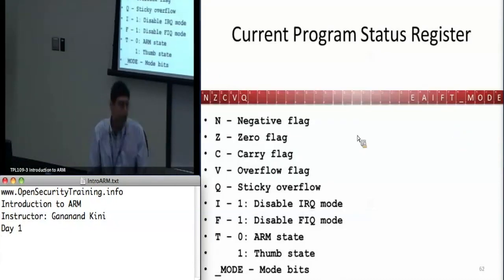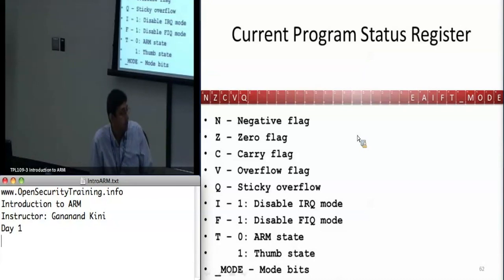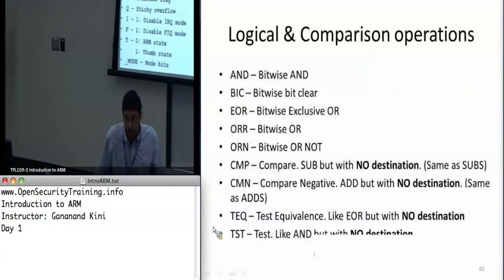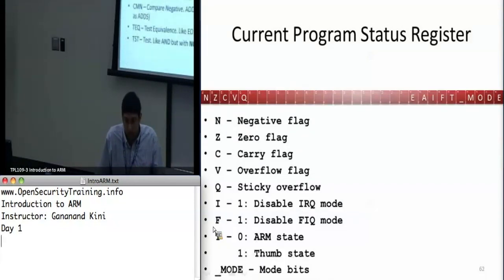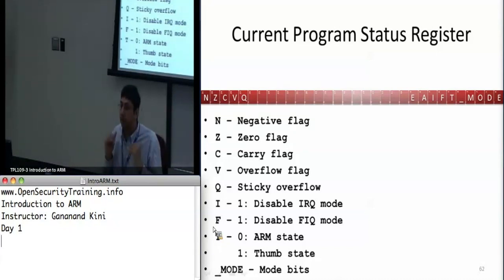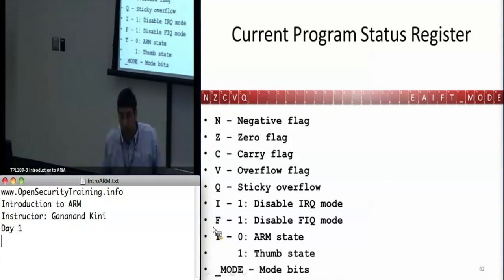This is the current program status register with your flags — the CPSR. It's included here as a reference for the logical operations which come next, so people can look it up rather than referring elsewhere.